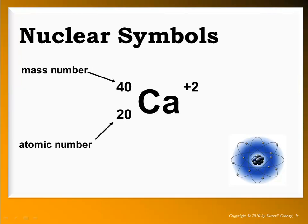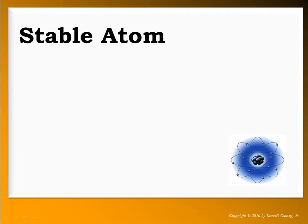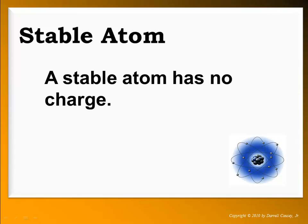So let's look and learn how to write those. There's the mass number, the atomic number, and the charge. Remember that a stable atom has no charge and pretty much the only place you find a stable atom is on the periodic table. Except for the noble gases, just about every atom obtains a charge of some type. It either gains electrons or loses electrons and gets a positive or negative charge.